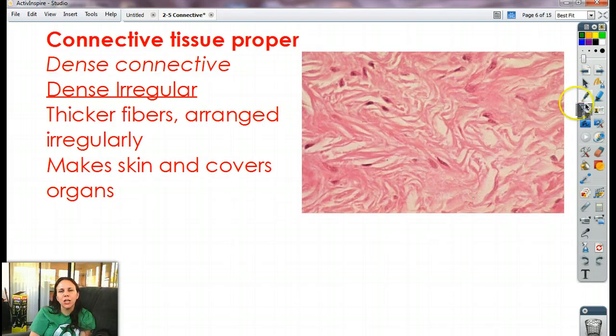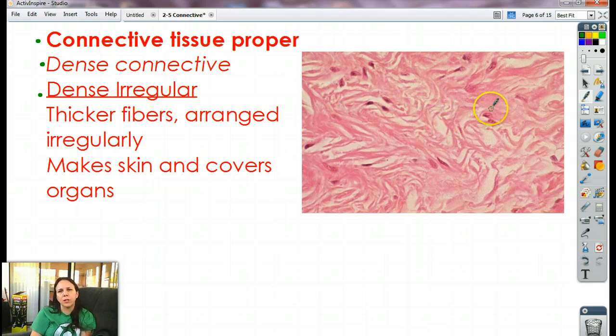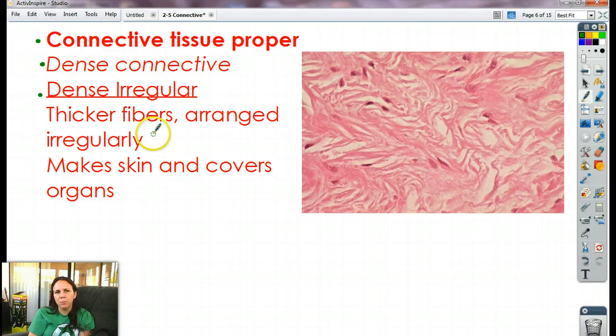Okay, the next one is dense irregular. So we're still under the category of connective tissue proper, under dense connective, dense irregular. Now I like this one because it kind of looks like if you were to put water coloring or something in water and then take a toothpick and just kind of smear it all around. Looks like the top of the ocean to me. It's irregularly arranged whereas the other ones were nice and even. Thicker fibers in the previous one, they're arranged all over the place. This also makes your skin and covers up some of your organs. So this is what we find under our epidermis. So because it's irregular, you have the ability to kind of squish it and extend it as well.